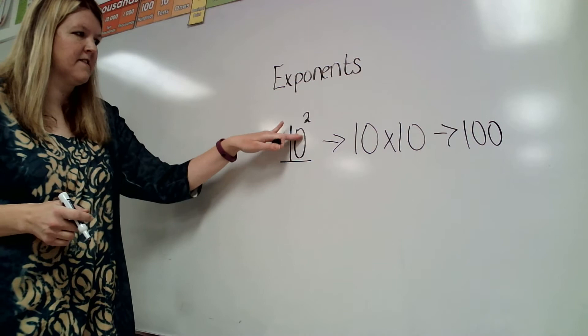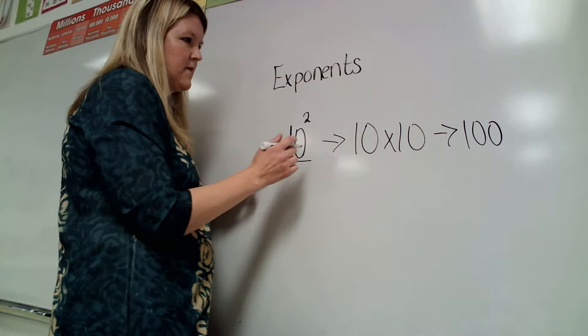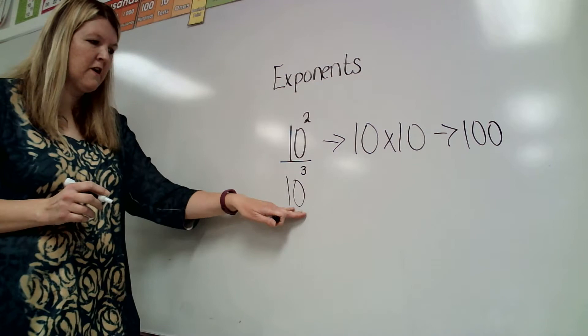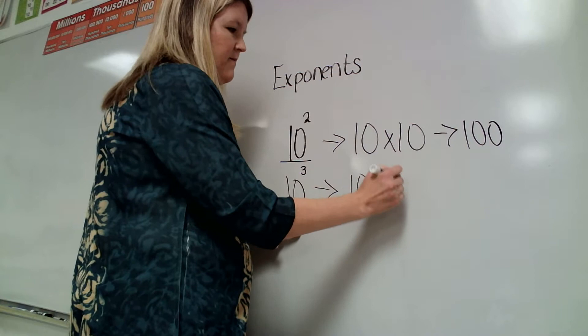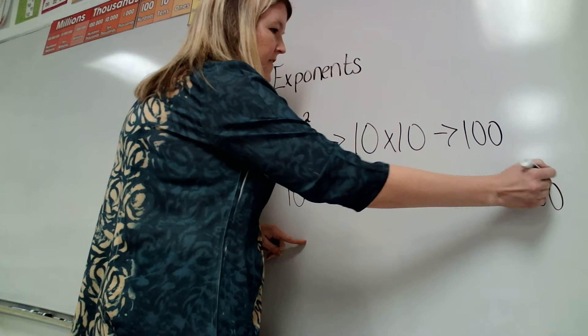We could also say this as 10 squared – that's another way to read these. And if I had 10 to the 3rd power, we can say 10 to the 3rd power or 10 cubed and that would mean the same thing as 10 times 10 times 10.